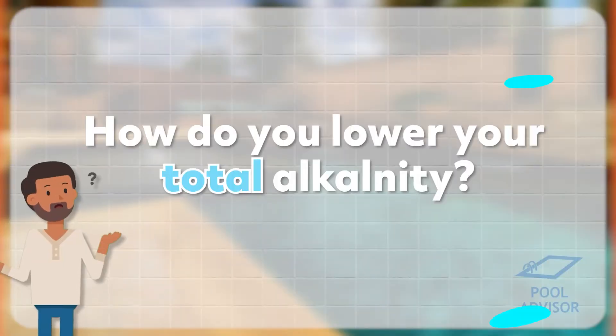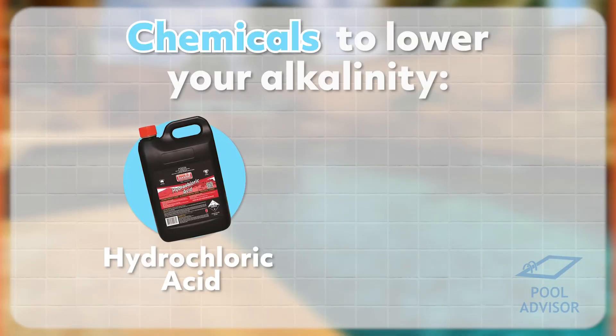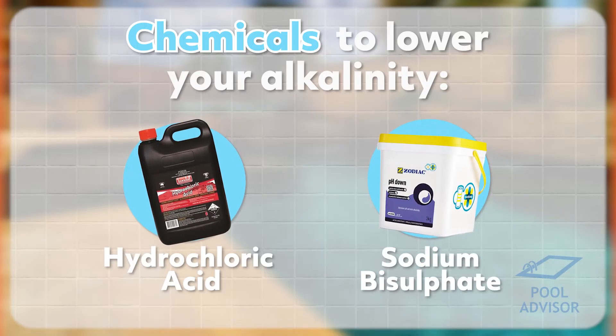And how can you do that? How do you lower your total alkalinity level? Well, there are two main chemicals that you can use for the job. The first one is hydrochloric acid, sometimes known as muriatic acid, and the second is sodium bisulfate, which is also known as dry acid. Both of these will react with the alkalinity in your water and they will reduce that alkalinity level, and that will also lead to a drop in your pH as well.